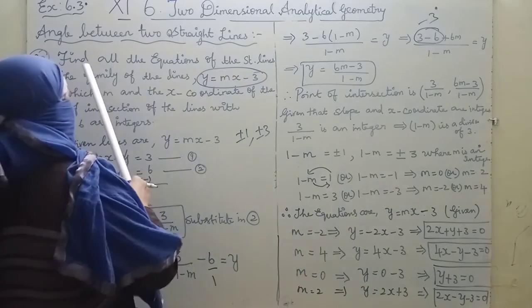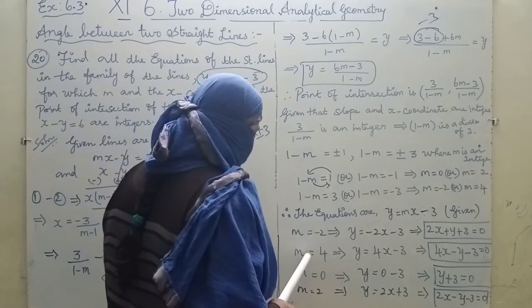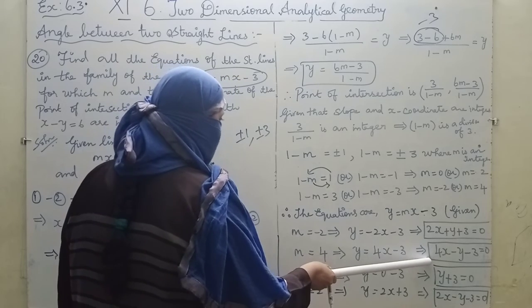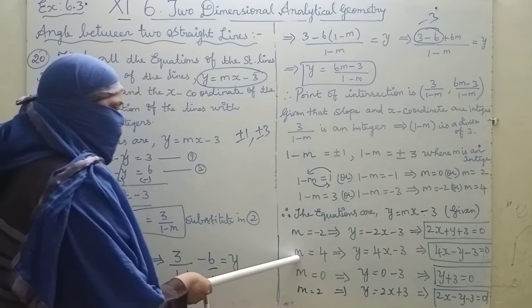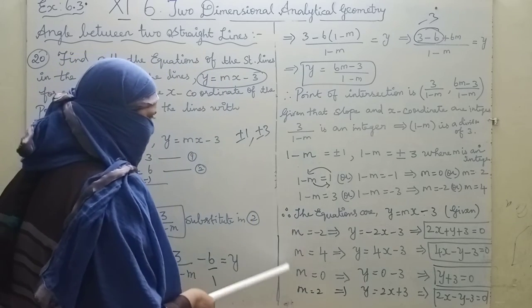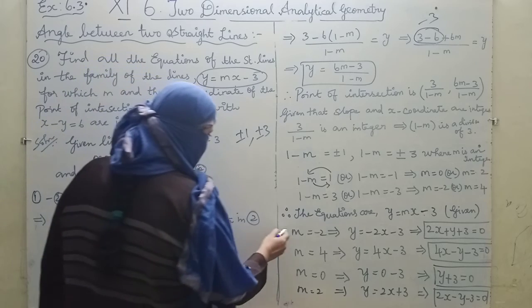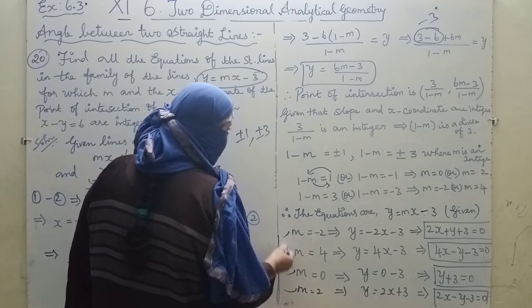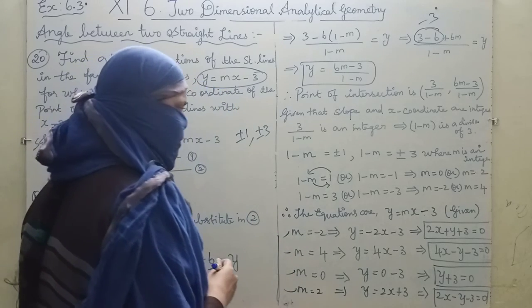These are all the equations found. In the book, m = 4 is highlighted, but we found all equations. The book gives 3 answers overall.